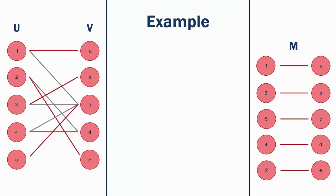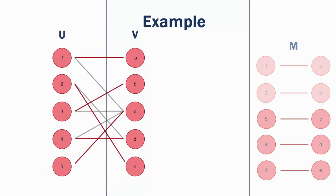We are unable to progress our breadth-first search, as there are no more unmatched vertices in U. Therefore, we stop the algorithm, as the current bipartite graph has a maximal matching.